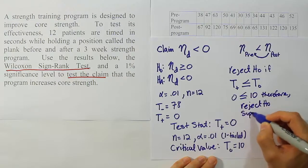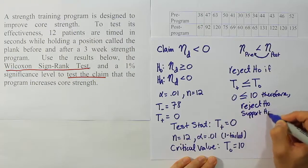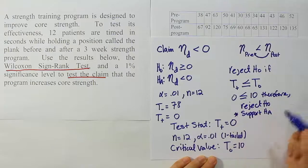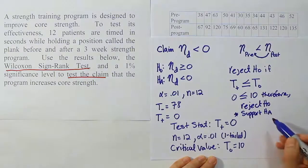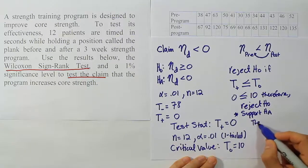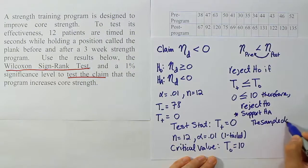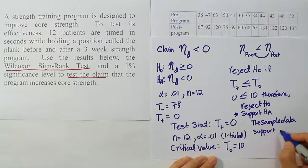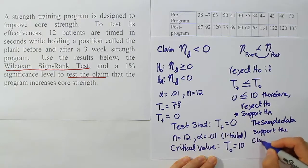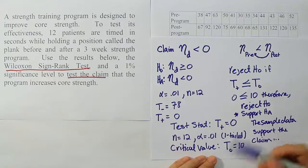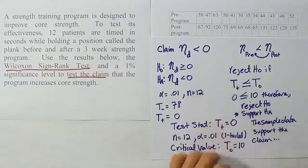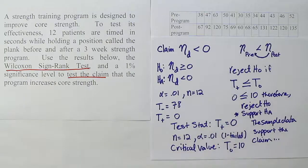If we reject H0, we'll support HA. Okay, now looking at our claim, we see our claim is HA. So we're going to go ahead and say that we should use the wording support the claim. So we'll say the sample data support the claim. The sample data support the claim. And of course, the claim is that the exercise program increases core strength. That's the idea behind the problem. So that the program increases core strength for its participants.